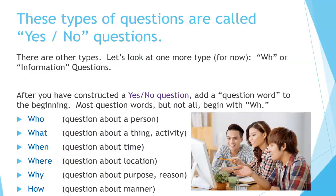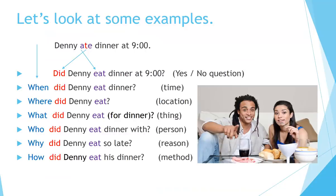These types of questions are called yes/no questions, because the answer is either yes or no. There are other types. Let's look at one more type: WH or information questions. After you have constructed a yes/no question, add a question word to the beginning. Most question words begin with WH. Who is a question about a person. What is a question about a thing or activity. When is a question about time. Where is a question about location. Why is a question about purpose or reason. How is a question about manner.